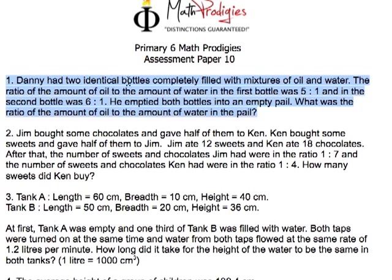Question number 1: Danny had two identical bottles completely filled with mixtures of oil and water. The ratio of the amount of oil to the amount of water in the first bottle was 5 is to 1 and the second bottle was 6 is to 1. He emptied both bottles into an empty pail. What was the ratio of the amount of oil to the amount of water in the pail? Very simple.